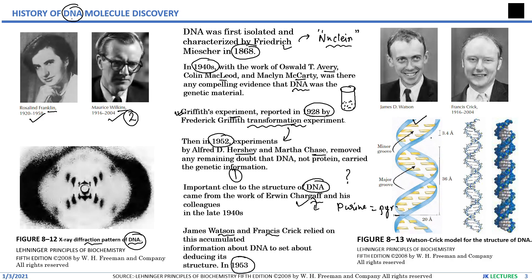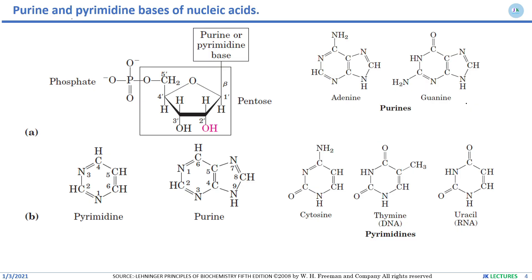The Watson and Crick DNA double helix has 3.4 angstroms difference between two nucleotides, a helix pitch of around 34 to 36 angstroms, and a diameter of around 20 angstroms. Moving to the second part — how DNA is formed and what its basic components are.